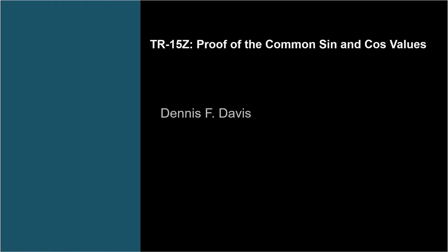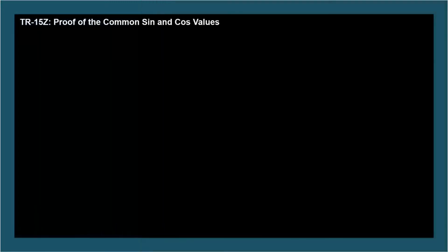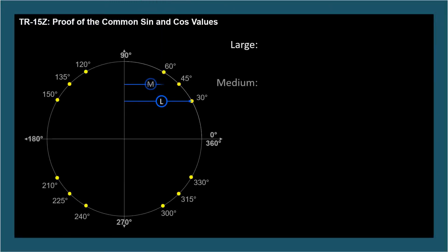This is video TR-15Z, where I'll prove the values I've provided for large, medium, and small values for sine and cosine. Z videos cover supplemental material that probably isn't mandatory for a trig class, but might be interesting or enlightening. I said in the main video that the values for large, medium, and small are square root of 3 over 2, square root of 2 over 2, and 1 half. Let's prove these are the true values.